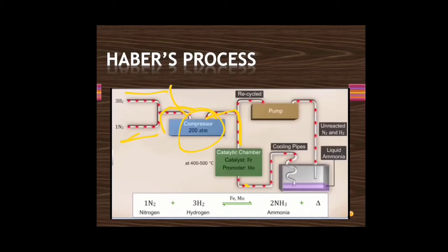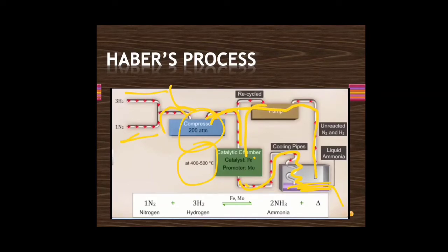Molybdenum is the promoter and a temperature of 400 to 500°C is maintained in the catalytic chamber. The compressed gases react to give NH3. The NH3 gas passes through cooling pipes, liquefies easily, and liquid ammonia settles at the base and is removed. Unreacted gases are sent back to the compressor or catalytic chamber depending on their pressure.